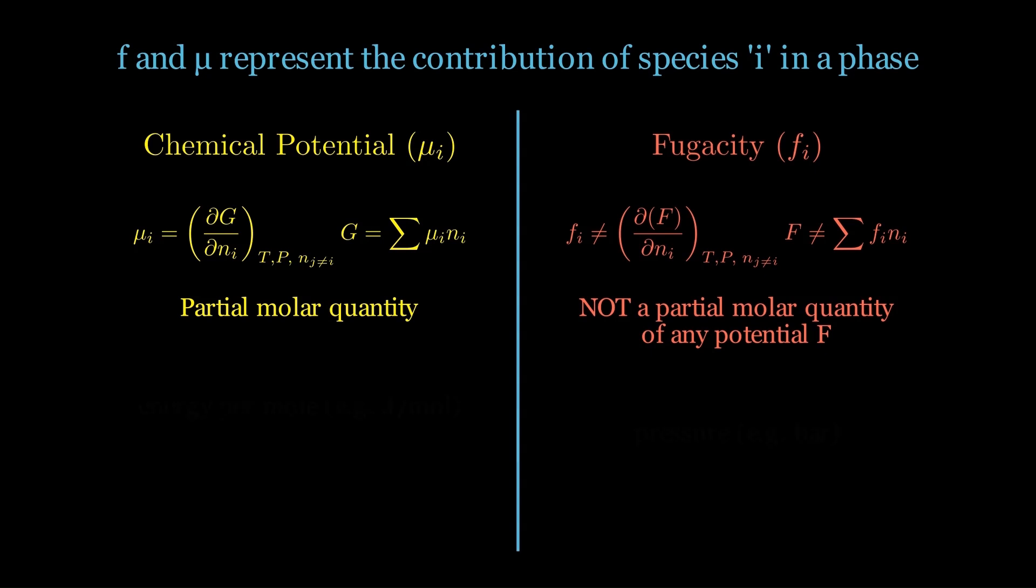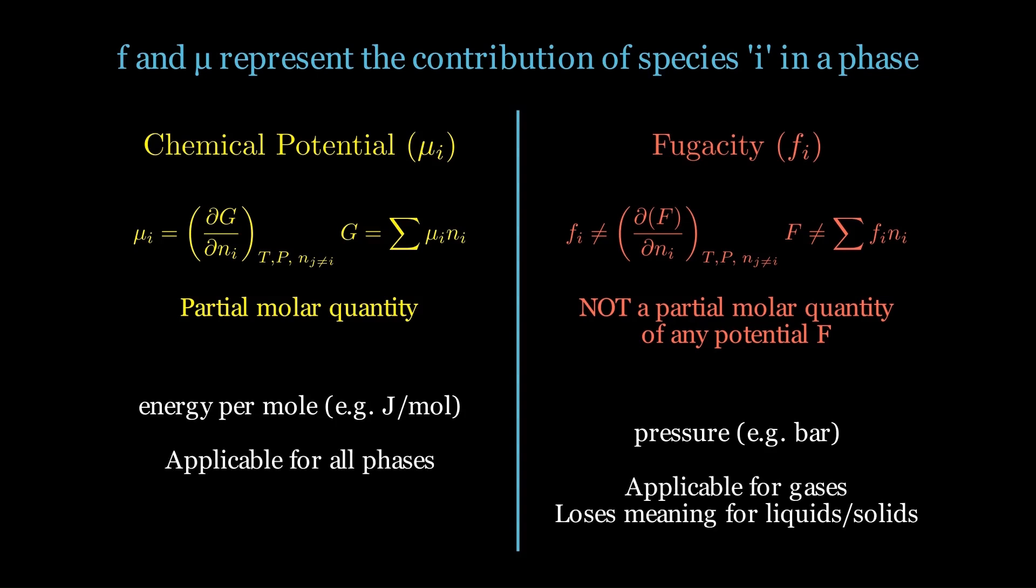Secondly, the units of μ_i are energy per mole. On the other hand, fugacity has units of pressure. Therefore, μ_i applies universally to all phases. Fugacity is most natural for gases. Therefore, in condensed phases it loses practical meaning. So while both help describe how a species contributes to a system, fugacity is limited in its applicability.